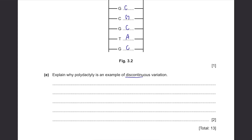Part E: Explain why polydactyly is an example of discontinuous variation. There are two features of discontinuous variation. First, it has a distinct phenotype — polydactyly cats clearly have more toes than normal. Other examples include blood group, which doesn't change over time and is fixed. Second, the phenotypes are not on a continuous scale. Height is a continuous variation — it ranges continuously. But polydactyly is fixed: cats either have 5, 6, or 7 toes. There are no intermediate values like 5.5 or 6.2 toes.